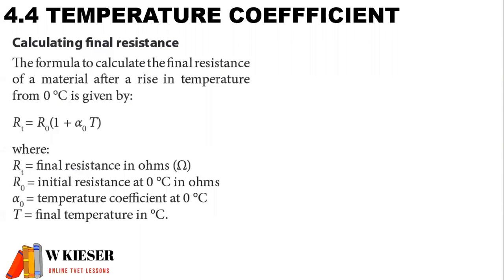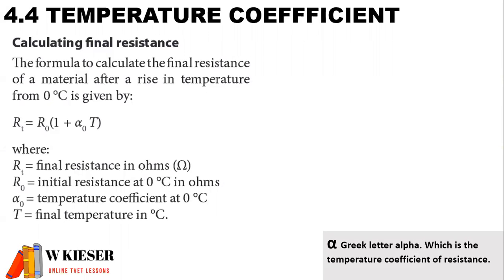Now to calculate the final resistance, the formula to calculate the final resistance of a material after a rise in temperature from 0 degrees Celsius is: RT is the final resistance in ohms; R0 is the initial resistance at 0 degrees Celsius in ohms; the Greek letter alpha is the temperature coefficient at 0 degrees Celsius; and T is the final temperature in degrees Celsius.